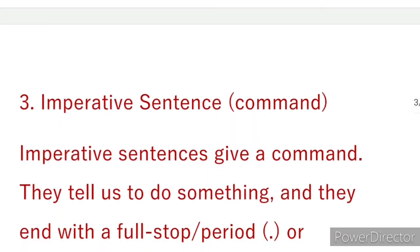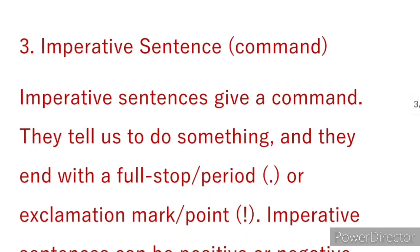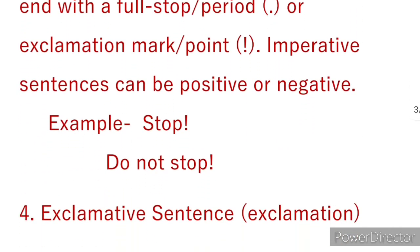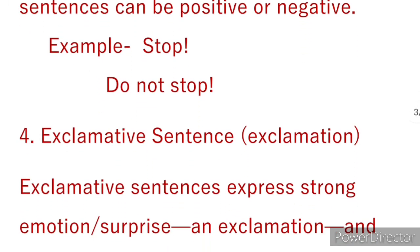The third type is the imperative sentence, which is used to give commands. Imperative sentences tell us to do something and end with a full stop or sometimes an exclamation mark. They can be positive or negative. For example, 'Stop' is positive and 'Do not stop' is negative.